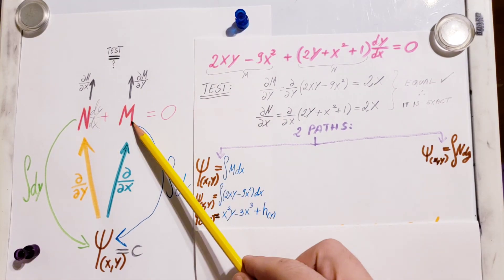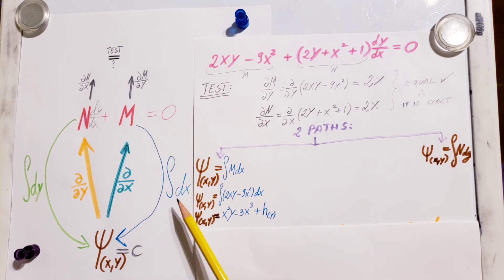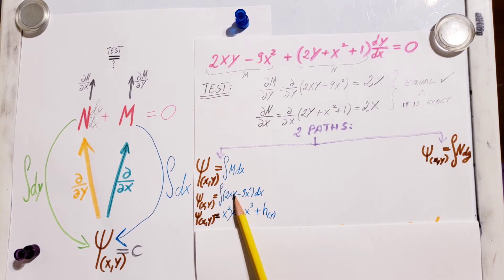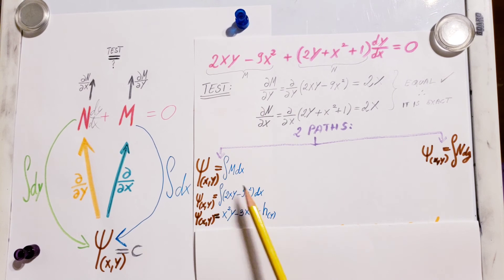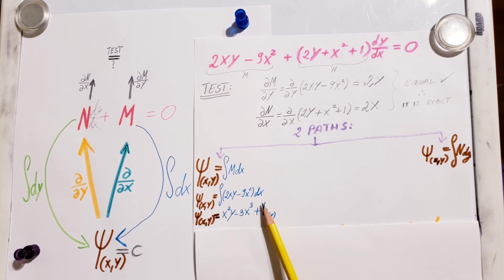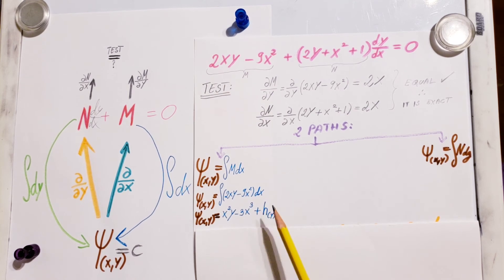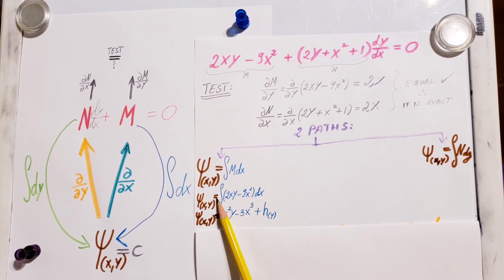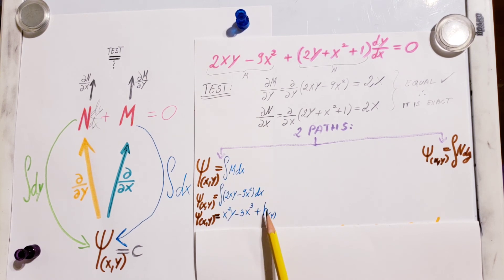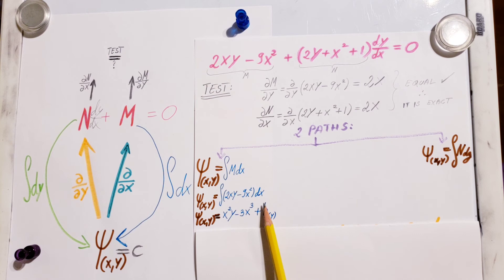I'm going to take an integral of my M with respect to x. I plug in the part I designated as M and take the integral with respect to x. The important part we cannot forget: we will have a function left over in terms of y, because we are integrating only with respect to x. So we'll have h(y) left over — don't forget this.